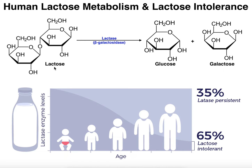Lactose is the primary sugar found in milk. Milk is obviously meant to feed infants of a particular species. This is why human infants breastfeed — they're completely dependent on the mother and can't fetch food for themselves, so they need the milk, which has everything they need metabolically speaking.